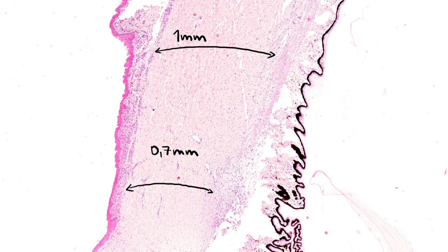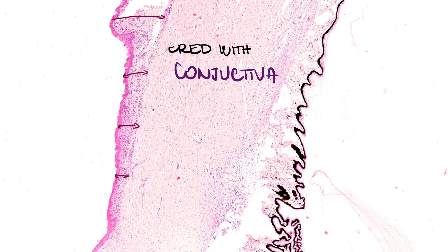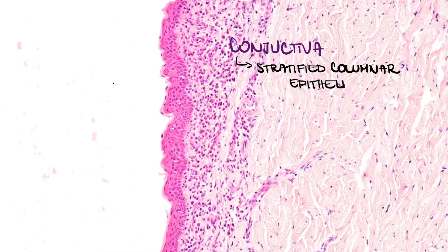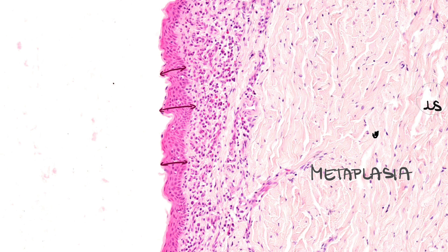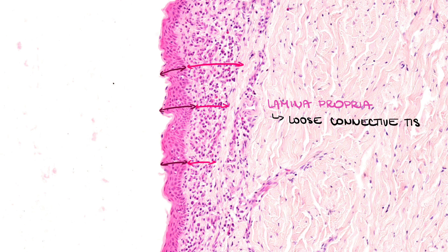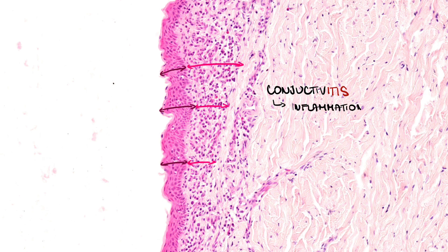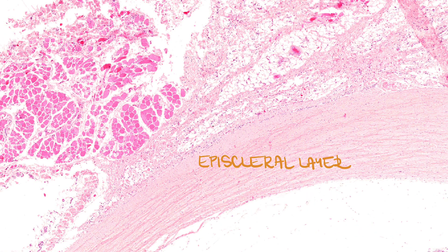The sclera is about one millimeter thick and 0.7 millimeters in the limbus area. The sclera is covered with conjunctiva in the front part. Conjunctiva consists of stratified columnar epithelium containing numerous goblet cells. In this specimen we can see more stratified squamous epithelium, probably because of the process of metaplasia — where one type of differentiated epithelium, in this case the stratified columnar, is replaced by stratified squamous epithelium. There is a lamina propria underneath composed of loose connective tissue. Inflammation of the conjunctiva is called conjunctivitis and can be seen as redness of the eye. The layer above the sclera is called the episcleral layer and is composed of loose connective tissue connected to the periorbital fat.